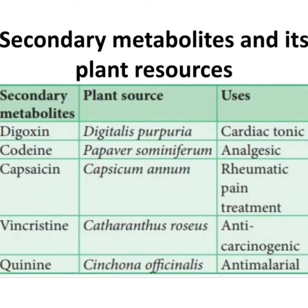Here is a table of secondary metabolites with their plant sources and uses: digoxin from Digitalis purpurea — cardiac tonic; codeine from Papaver somniferum — analgesic; capsaicin from Capsicum annuum — rheumatic pain treatment; vincristine from Catharanthus roseus — anti-carcinogenic agent; quinine from Cinchona officinalis — anti-malarial drug.